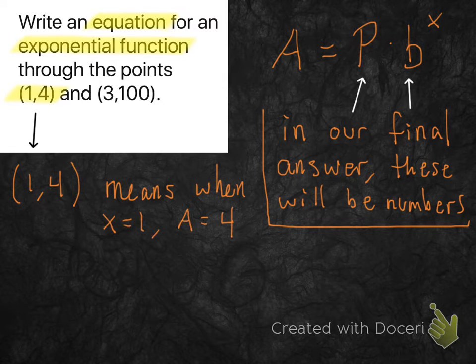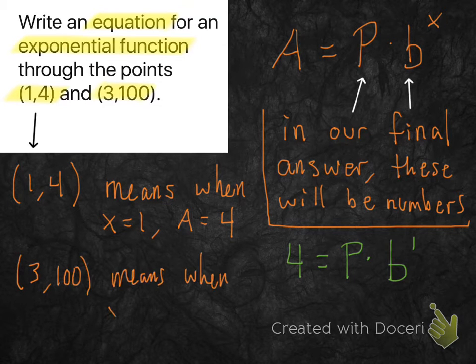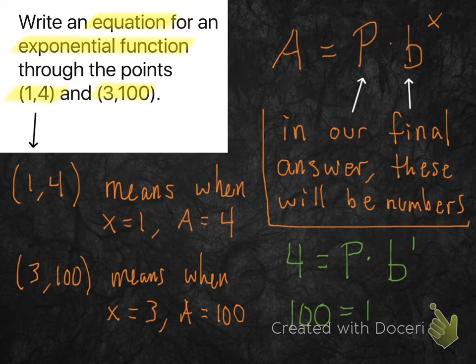1 comma 4 means when x is 1, A is 4. So let's plug that stuff in to our very top exponential equation and see what that looks like. So I replaced A with 4 and x with 1. 3 comma 100 means almost the same thing, just with different numbers. So if you plug that into the top equation, that exponential equation, this is what you get. Now this is not our answer. We need to use these two pieces of information to figure out what p and b are as numbers.